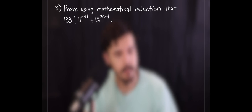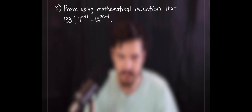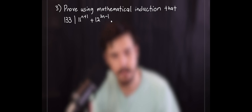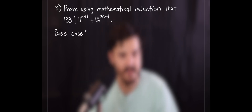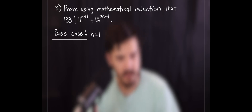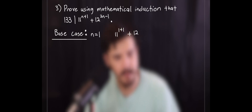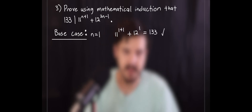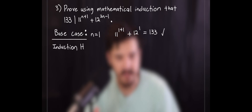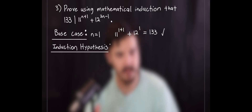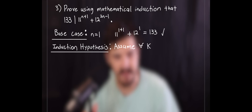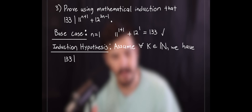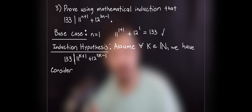Moving on to our third example, we have a callback to mathematical induction from our first video. We're going to prove using mathematical induction that 133 always divides 11 to the n plus one plus 12 to the two n minus one. As always with mathematical induction, we begin with the base case when n equals one. Plugging in one gives 11 squared plus 12 to the first power, which equals 133, and 133 does divide itself. Next, we write our induction hypothesis: assume that for all natural numbers k, 133 divides 11 to the k plus one plus 12 to the 2k minus one, meaning we can write that expression as 133 times some integer m.